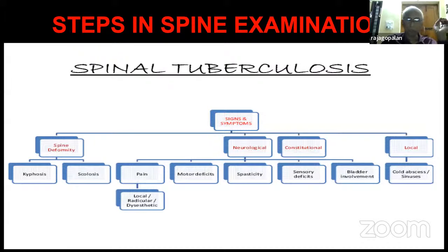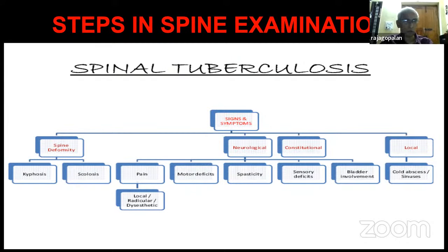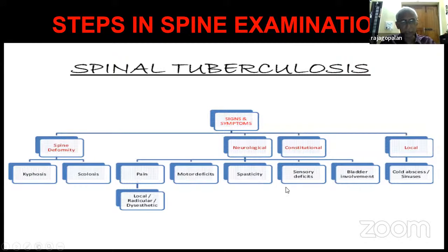Why? Because in the spine, it could be a deformity, it could be an infection. Take spinal tuberculosis as an example — you can have a deformity, you can have neurology, you can have constitutional problems. Each one separately you have to examine.